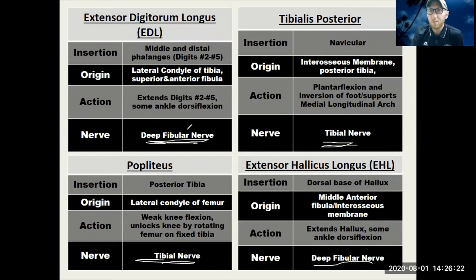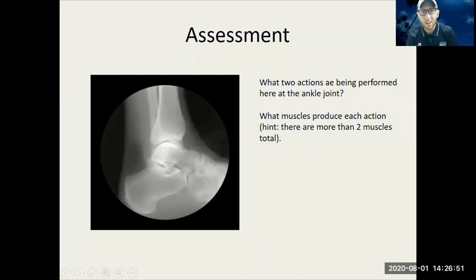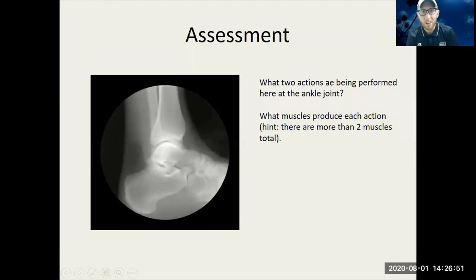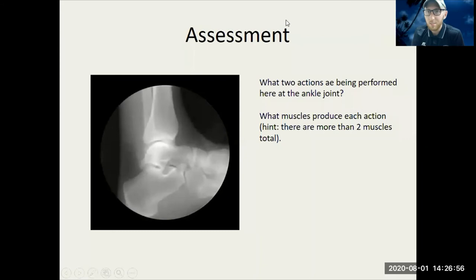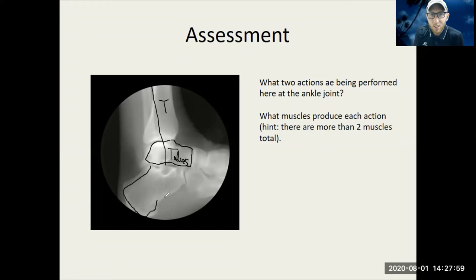Quick assessment: looking at an X-ray video you can see two different actions occurring. What are these two actions at the ankle joint? If you said ankle dorsiflexion and ankle plantar flexion, you'd be correct. Dorsiflexion here — and coming down the tibia, what is the bone right underneath? That would be the talus bone. The heel bone is the calcaneus. And the navicular is in there as well.